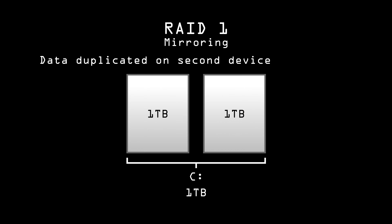RAID 1 is the first level that gives us fault tolerance. We might have two 1TB drives, but our logical volume only has 1TB of storage capacity. Whatever gets written to one drive gets written to the other as well — that's called mirroring. If one drive fails, the other can keep going while the first one is being replaced. RAID 1 won't give you a speed increase when writing data, but it could give you a performance increase while reading, since half the data can be read from each separate physical drive.